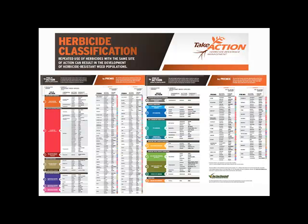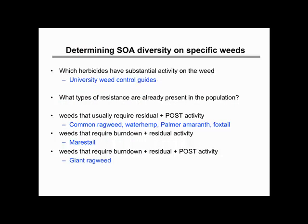As a reminder, we are using this chart as well as the OSU Wheat Control Guide to do this type of classification. When we look at specific weeds in terms of determining site of action, one thing to keep in mind is you have to know which herbicides have substantial activity on a weed. You can use your common knowledge or the University Weed Control Guides — we're basically assuming anything rated at least a 7 is relatively substantial activity.